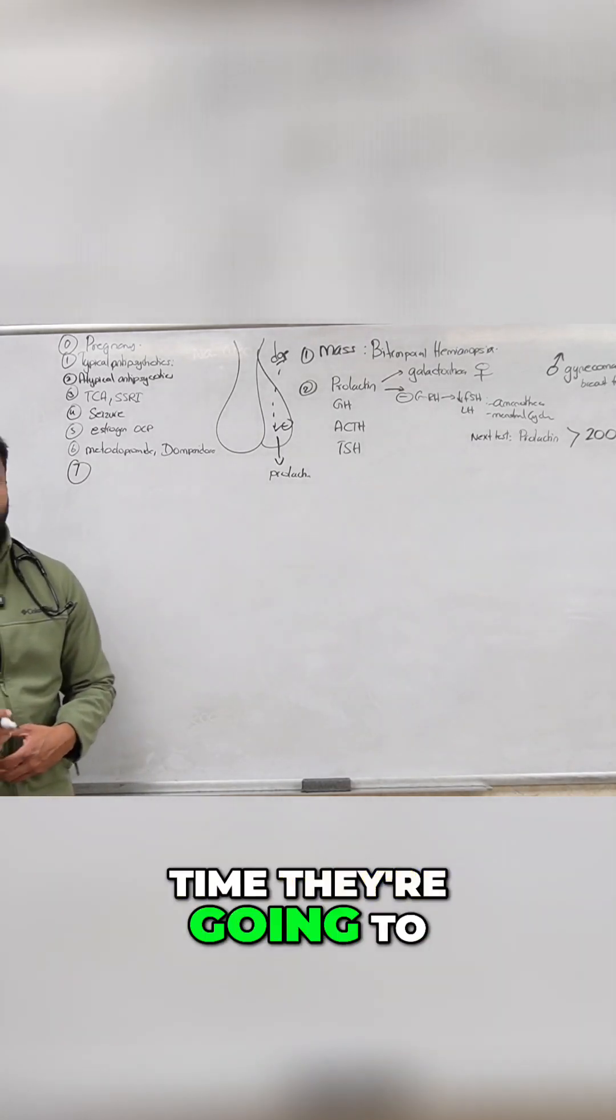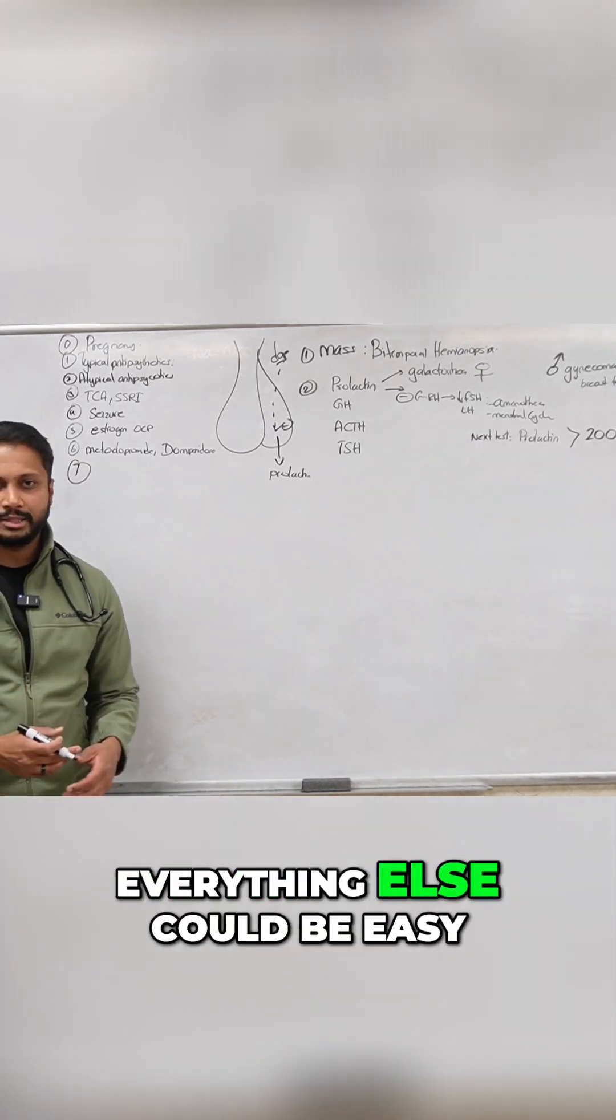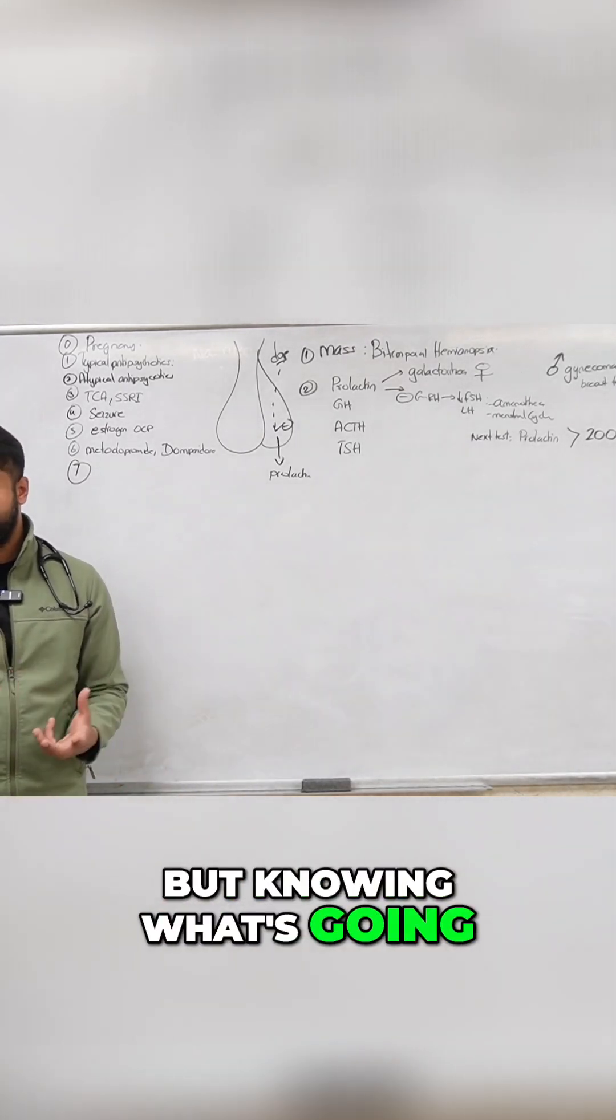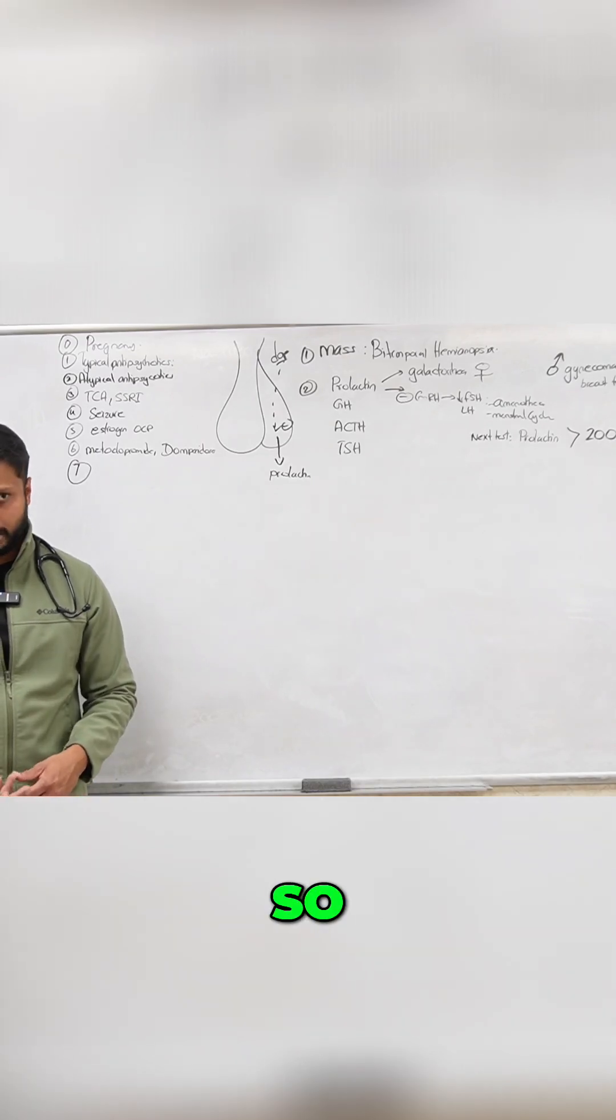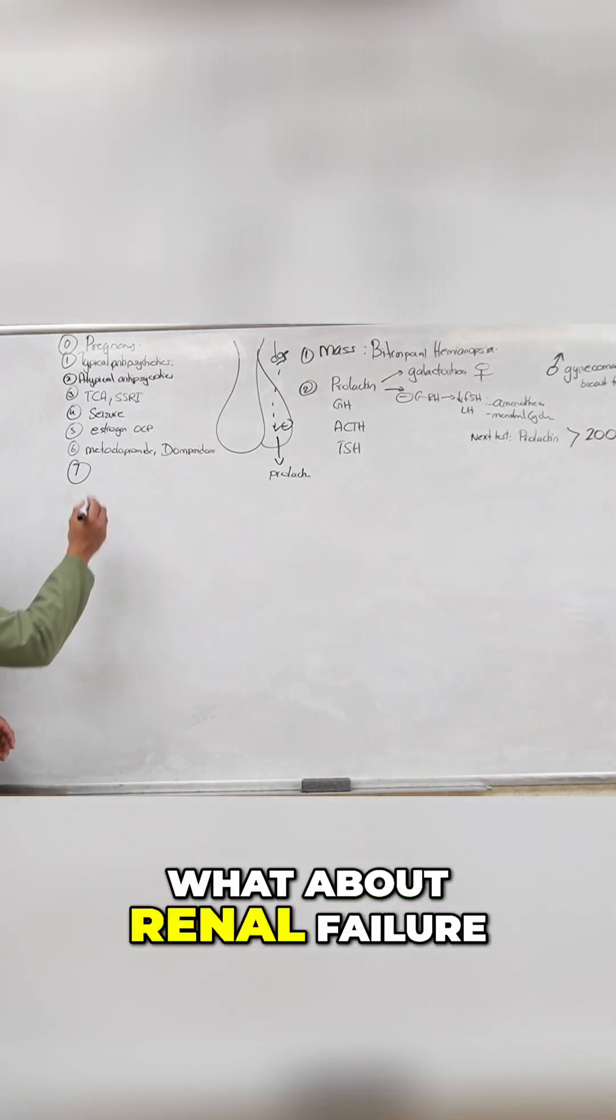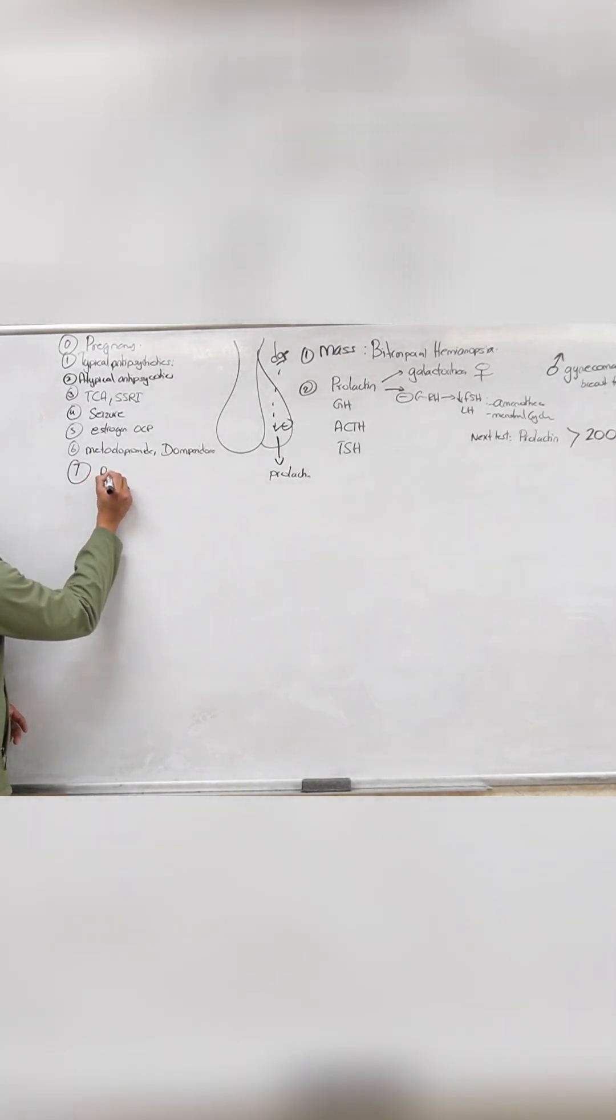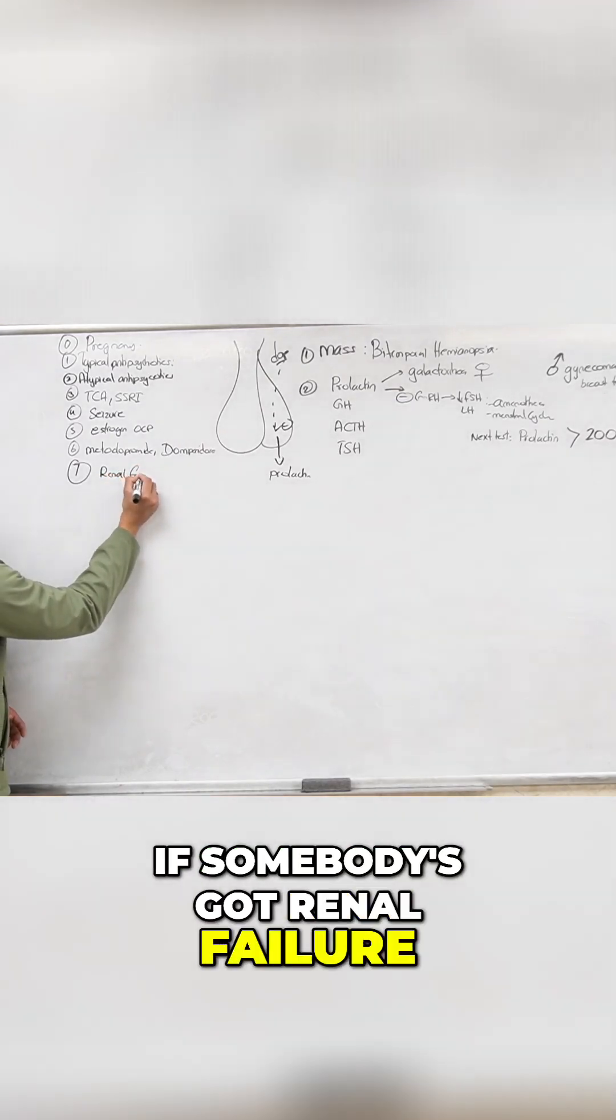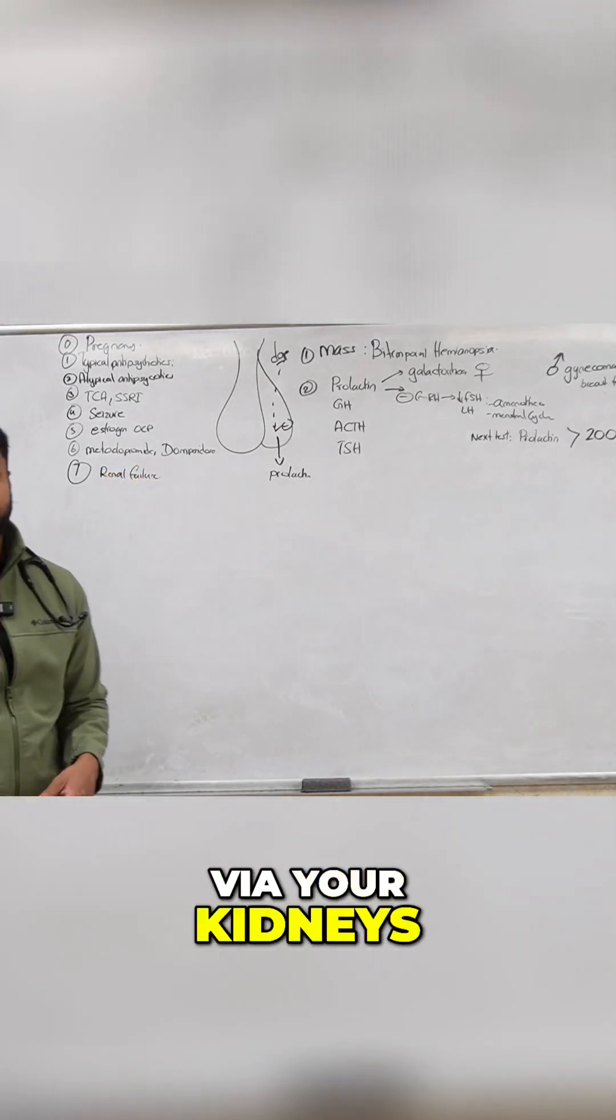What else can do it? Because the boards know this, so most of the time they're going to go after this. Everything else could be easy, but knowing what's going to mess it up is important. So what about renal failure? If somebody's got renal failure, your prolactin is eliminated by your kidneys.